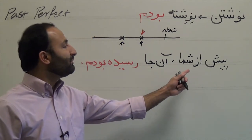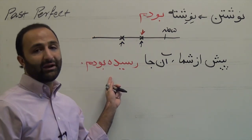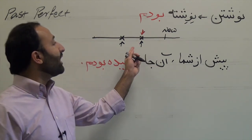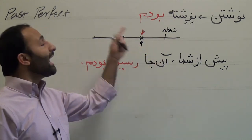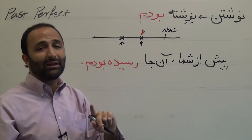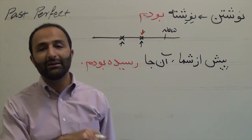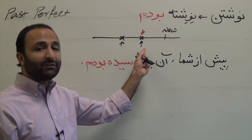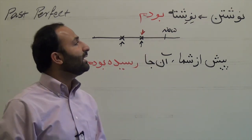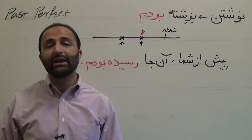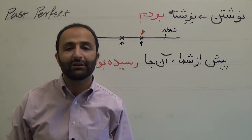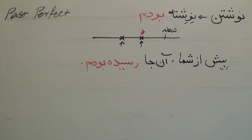Another example: before you, I had arrived there. It means that before you arrived in the past, I had arrived even further in the past. So it's about two actions — both happened in the past, but one is before the other. That was the lesson about how to form past perfect and its main usage in Farsi. Thank you.